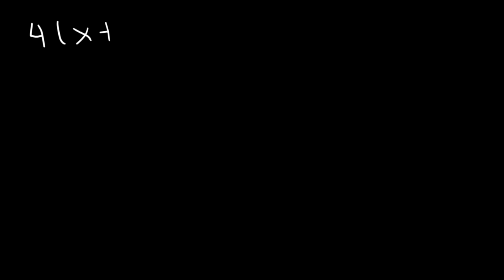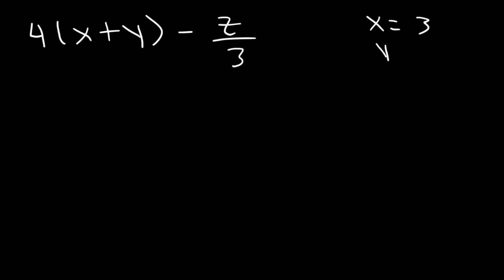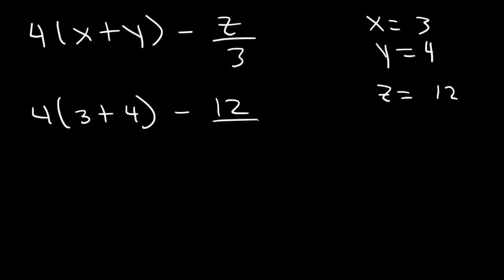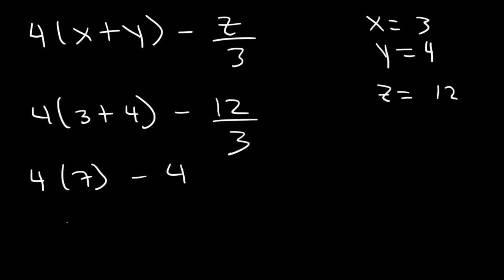This is the last example. The expression is 4 times x plus y, minus z divided by 3. Let's say x is 3, y is 4, and z is 12. All we need to do is replace x and y with 3 and 4, and substitute z with 12. 3 plus 4 is 7, 12 divided by 3 is 4, 4 times 7 is 28, and 28 minus 4 is 24. That's the answer for this example.